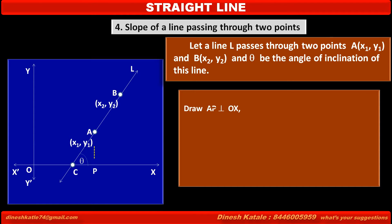Now we draw a perpendicular from point A on the x-axis, say AP, and a perpendicular from point B on the x-axis, say BQ. We also draw a perpendicular from point A on BQ, say AR.